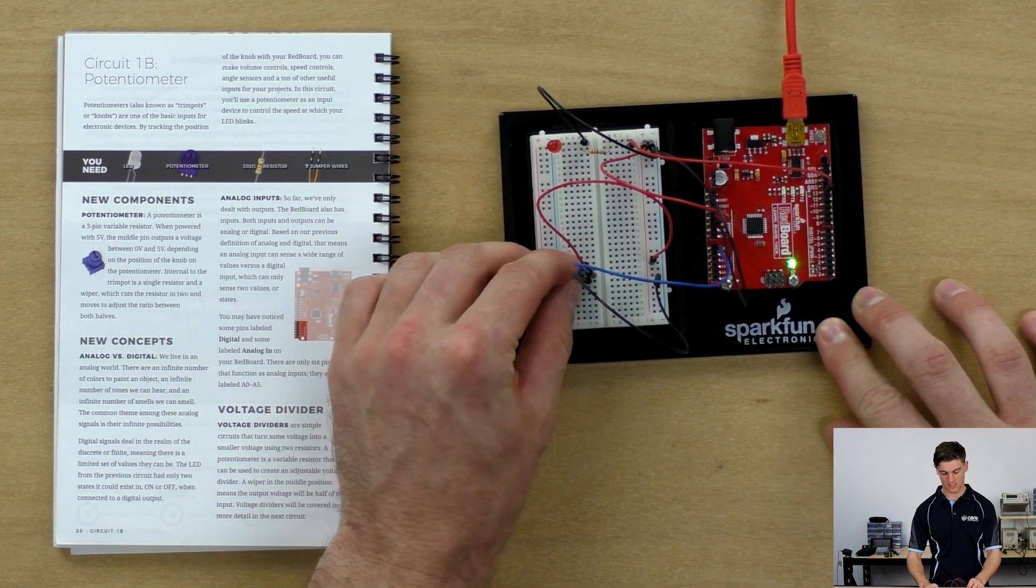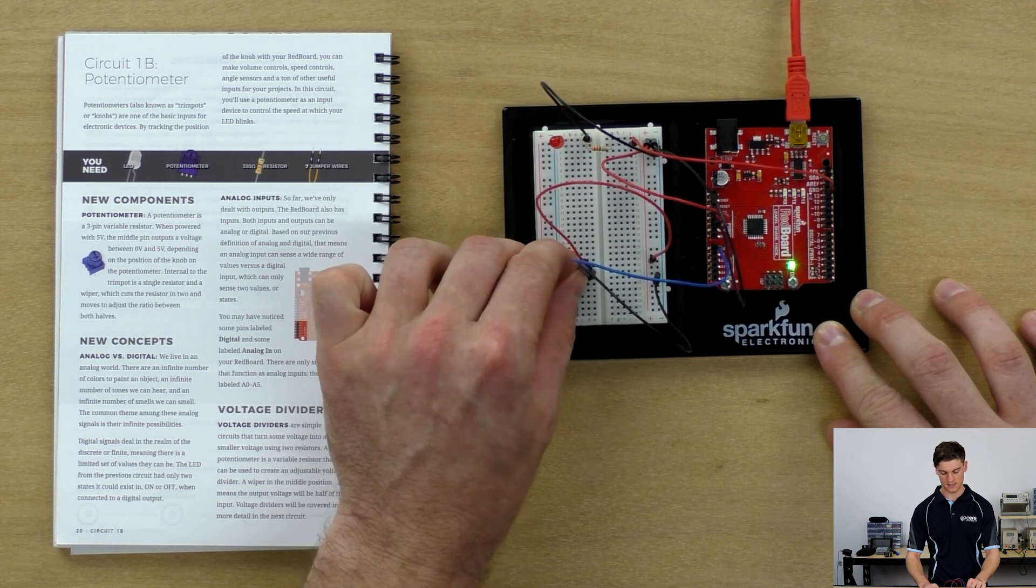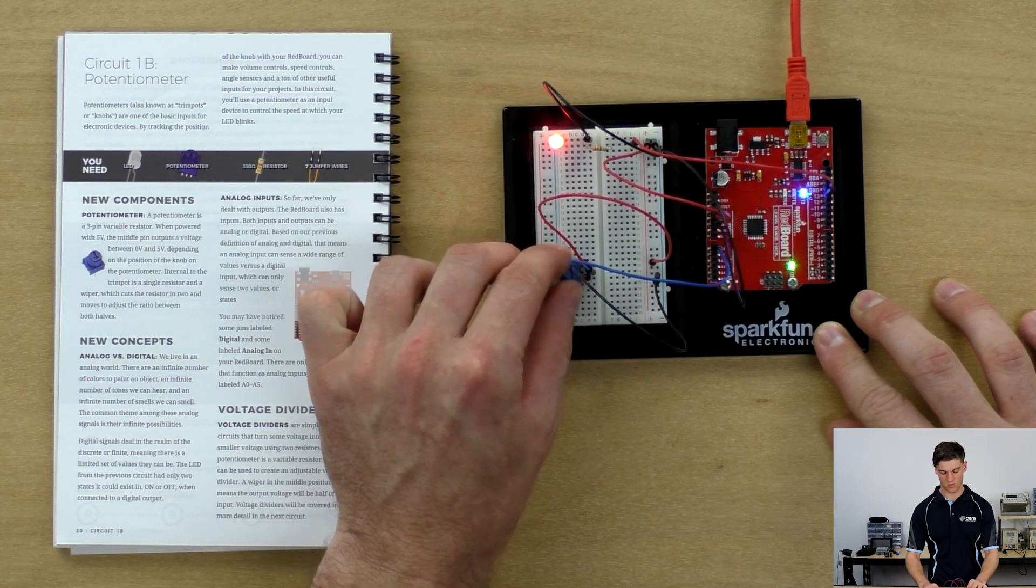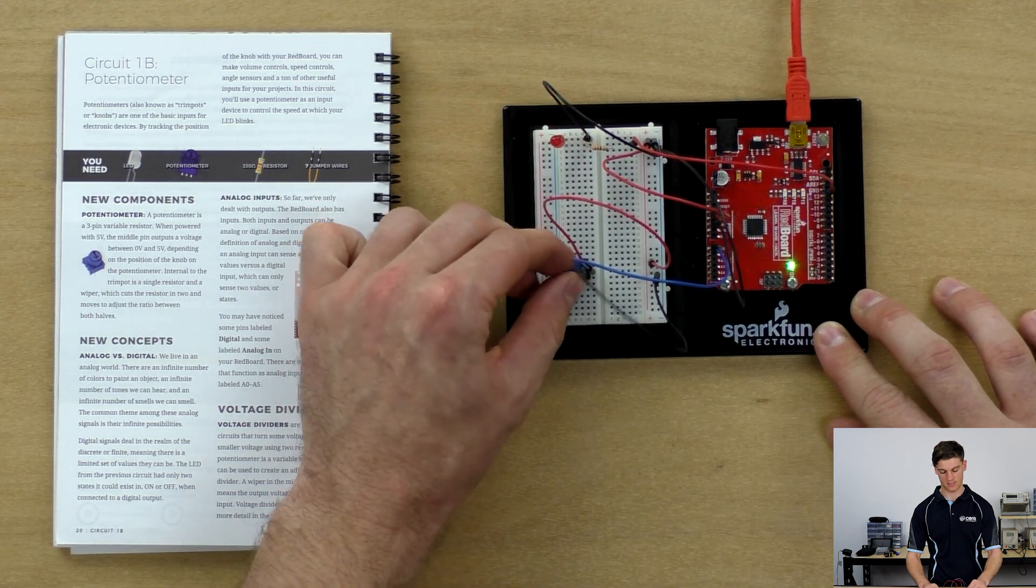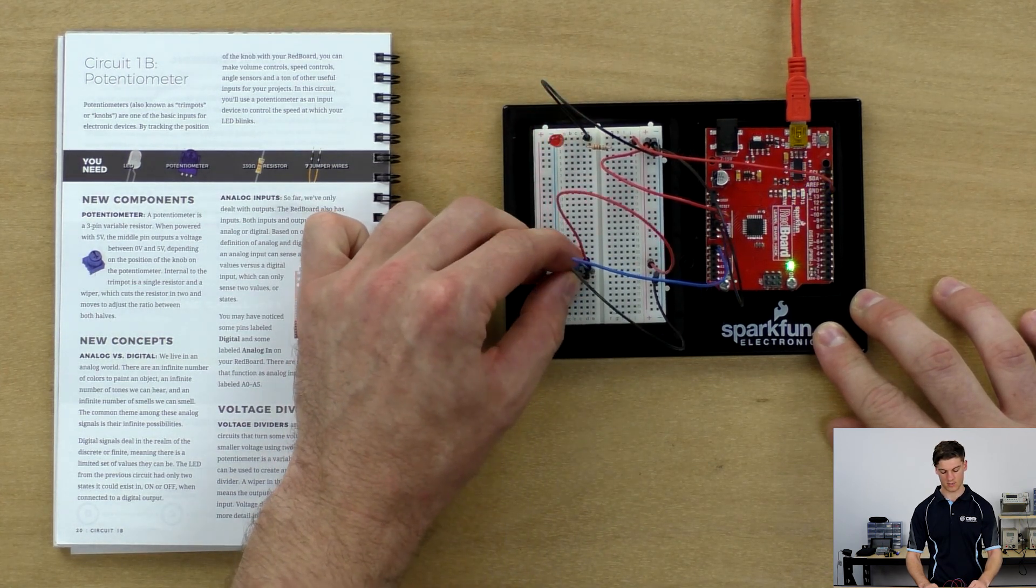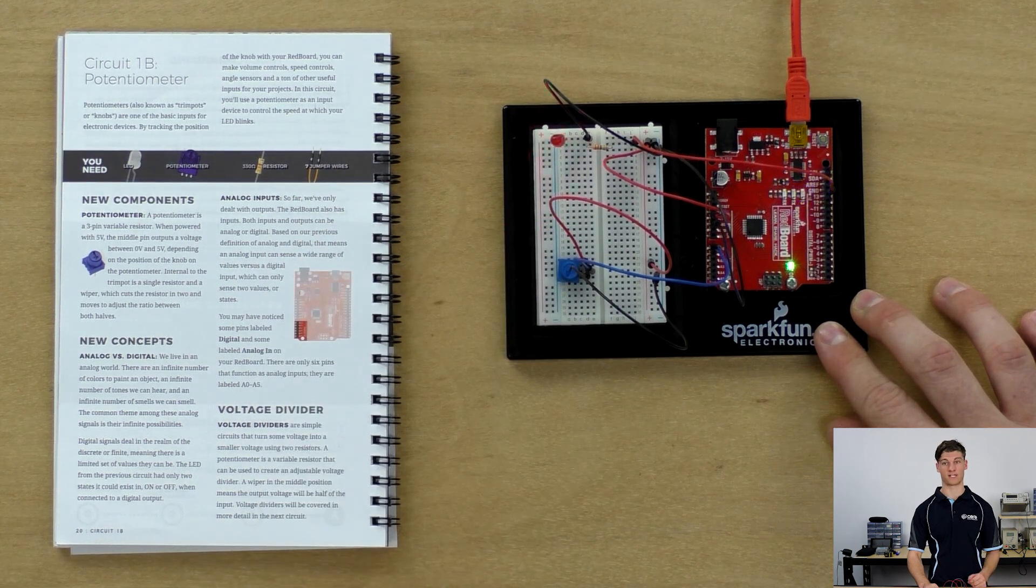You'll see that as we turn this, the delay between will become longer, and if we turn it downwards, it'll become a lot shorter until it's flashing really quickly.